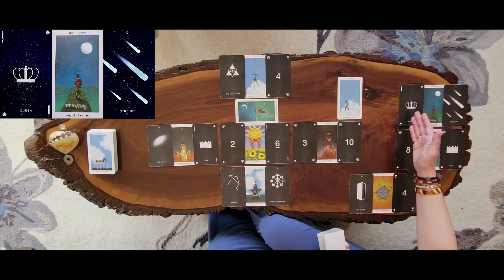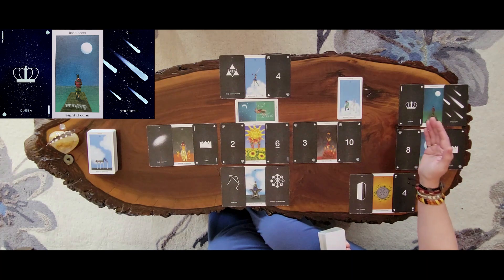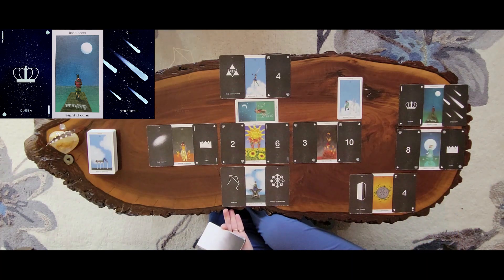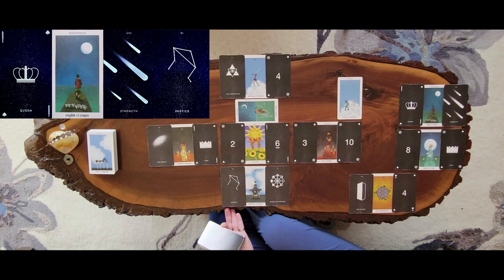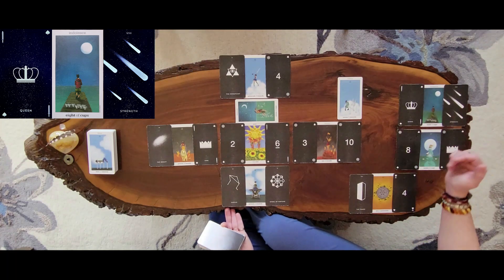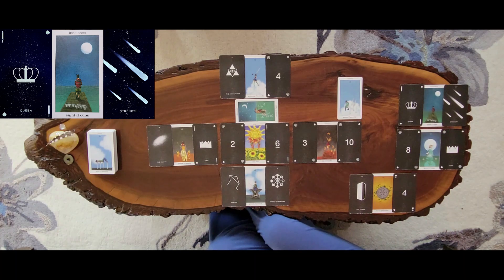And then the Queen of Swords then, again, makes these deals, makes the contracts, reads the contracts, communicates what it is that she needs and wants and has the strength to do so, even when it's difficult.